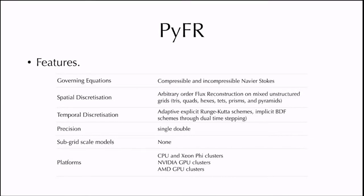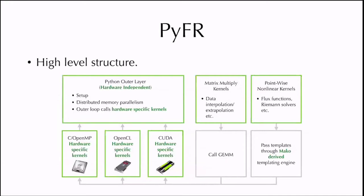In terms of hardware platforms, we're capable of running on CPU and Xeon Phi clusters, NVIDIA GPU clusters, and AMD GPU clusters, all with complete feature parity and performance portability from a single code base. The question is how do we accomplish this, especially given that Python is not usually regarded as a language that performs particularly well? In fact, its performance for anything computationally intensive is widely regarded as being completely atrocious. So how do we get good performance out of Python and leverage it to target all of these various hardware platforms in an effective manner?